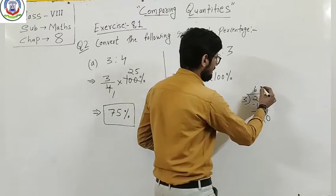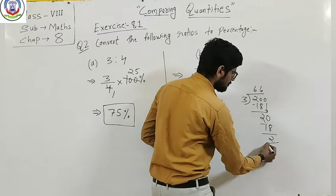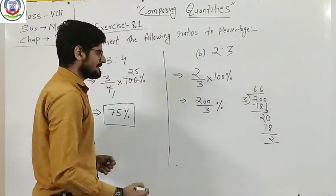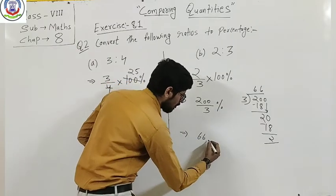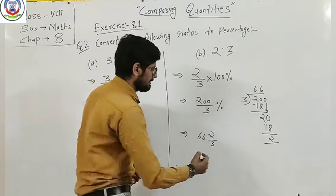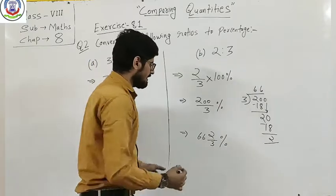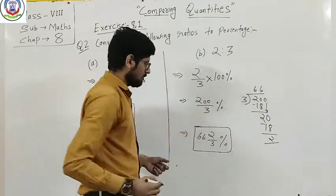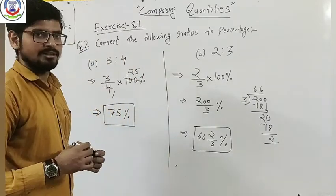So remainder is 2 and quotient is 66. Write the quotient on the side and the remainder on top of the denominator. That is 66 and 2 by 3, so the answer is 66 and 2 by 3 percent.